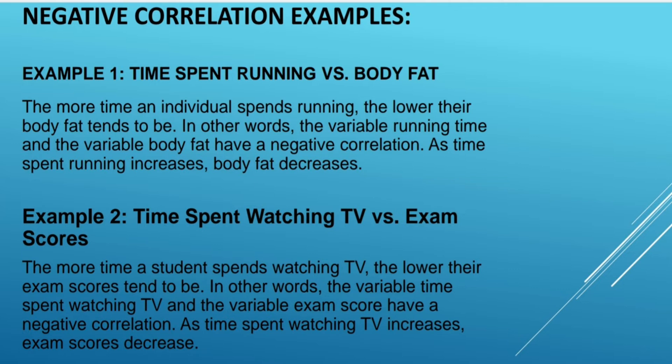Example 2: time spent watching TV versus exam scores. The more time a student spends watching TV, the lower their exam scores tend to be. The variable time spent watching TV and variable exam scores have a negative correlation — as time spent watching TV increases, exam scores decrease.